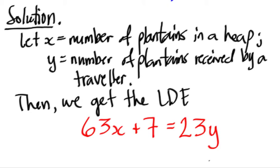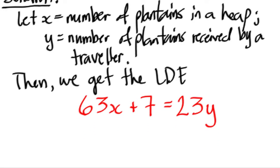Solving for Y, since Y is the number of travelers. So isolating the Y, what we have is Y equals 63X plus 7 all over 23. So this is our value, our equation for Y. Now, when X is greater than 0, clearly, Y should also be greater than 0.